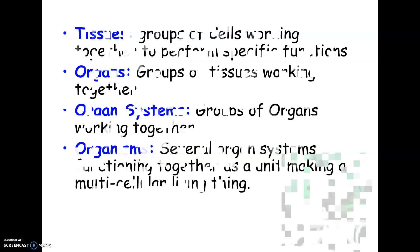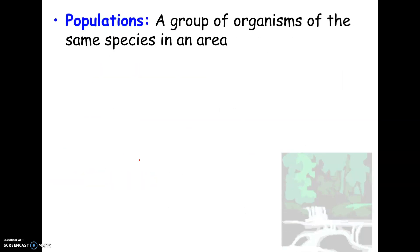Most of you learned the levels up to organism in freshman year. The levels you're less familiar with are above the organism level, which we'll revisit at the end of the year in our ecology chapter. A population is a group of organisms of the same species in an area — for example, a population of mallard ducks, bacteria, or mushrooms. They are typically the same species, meaning they can breed and make offspring together.